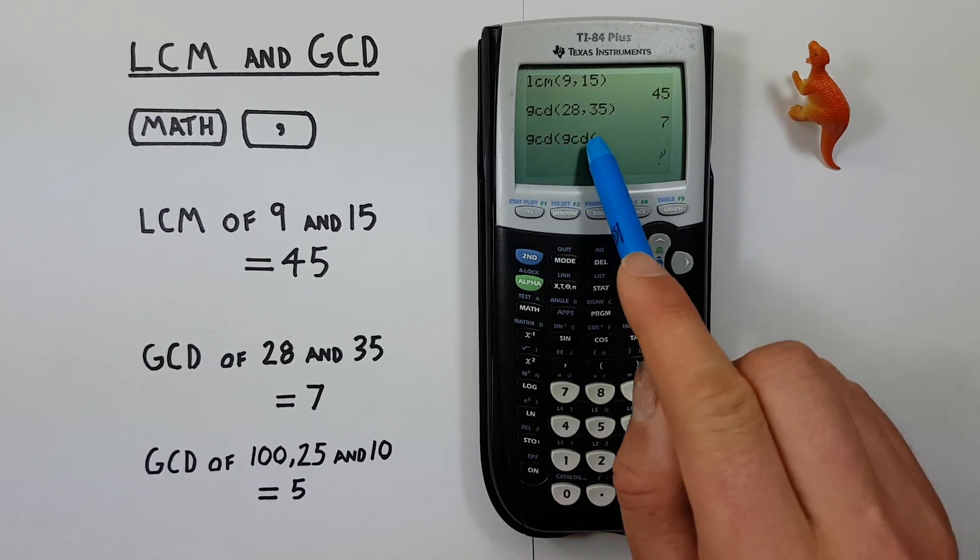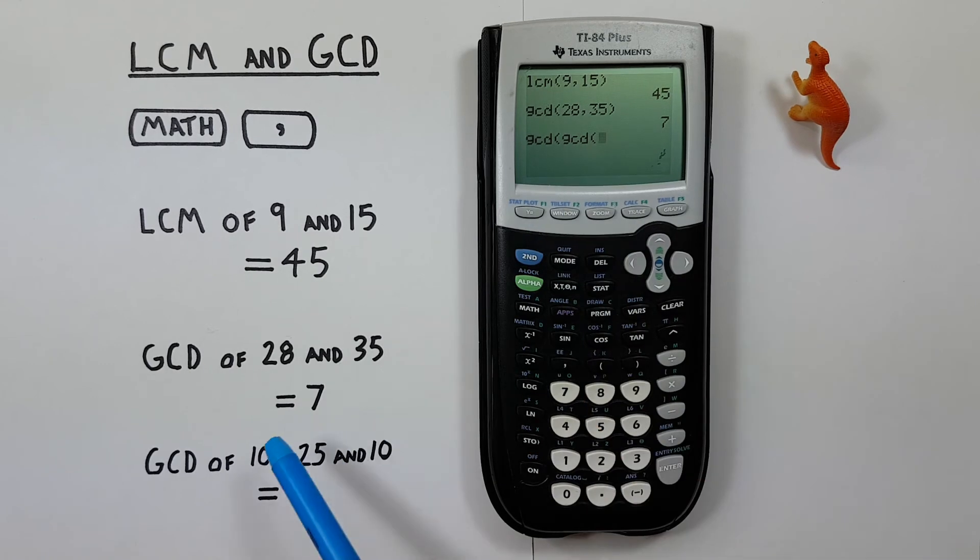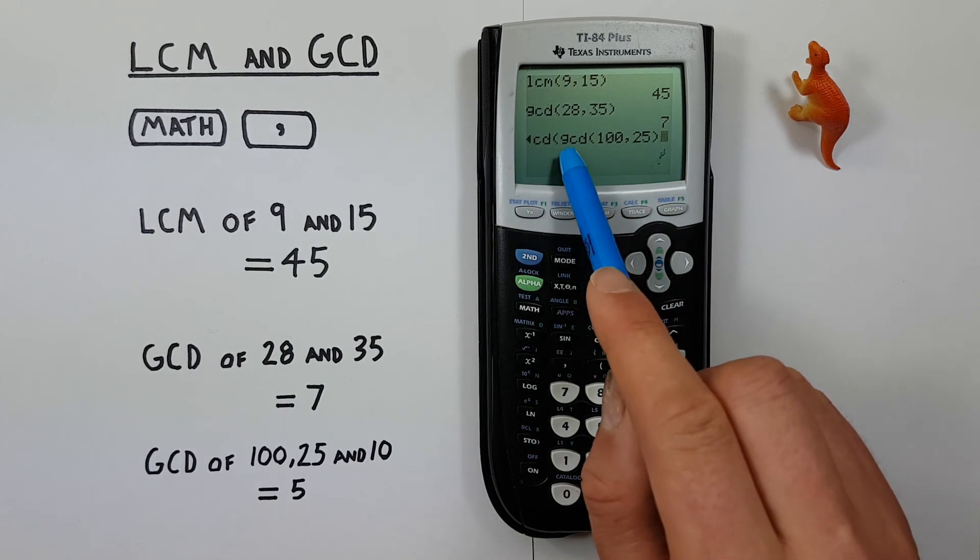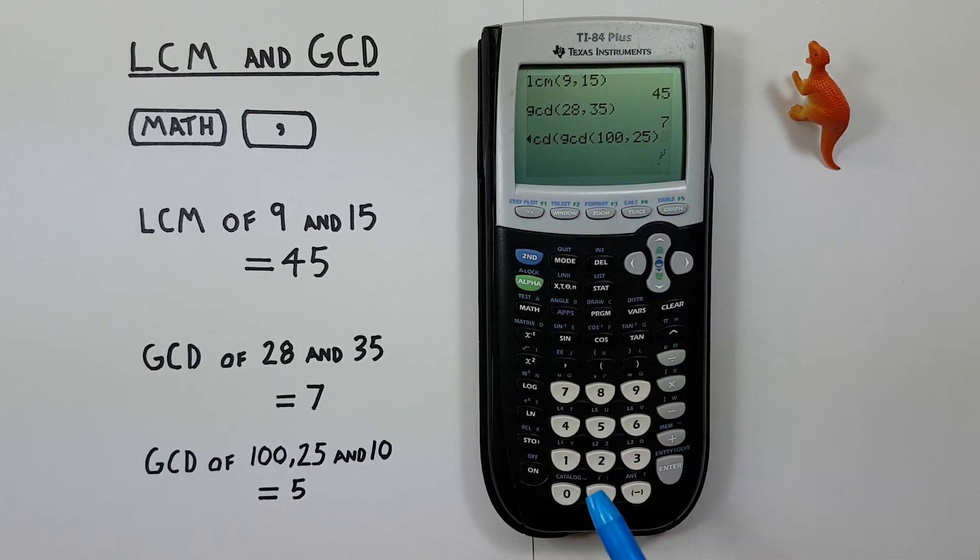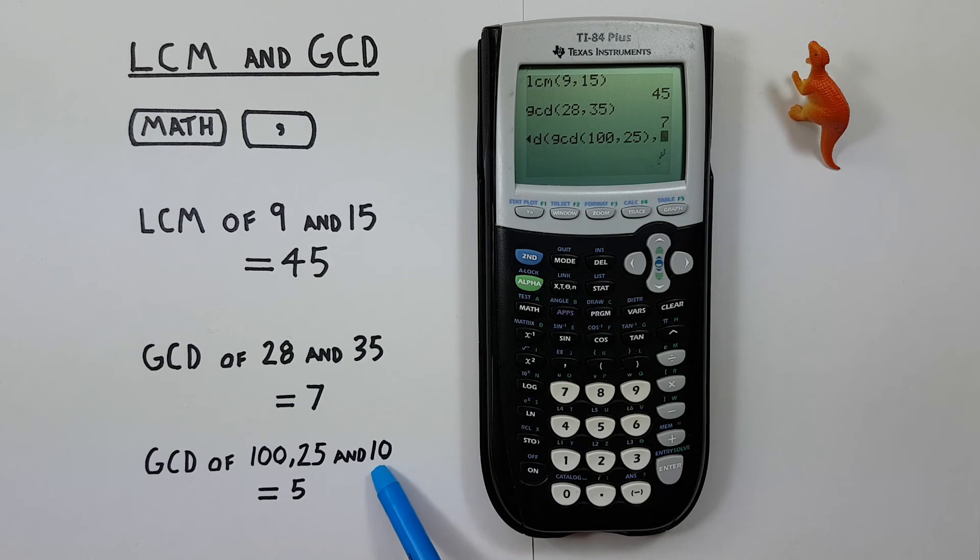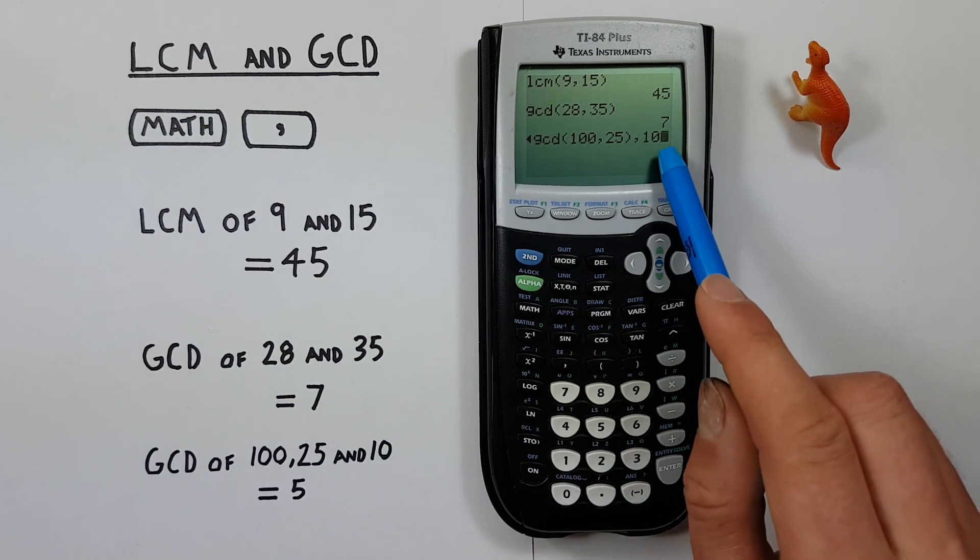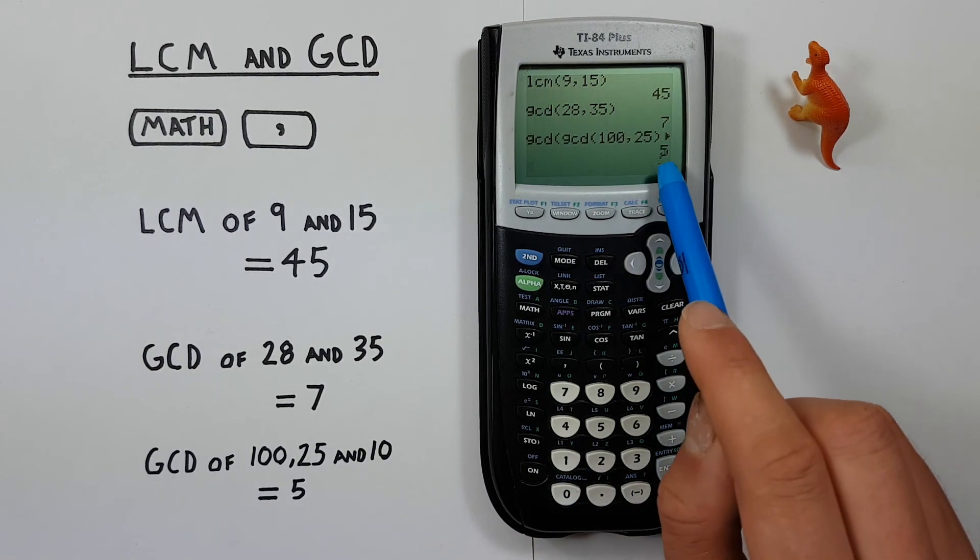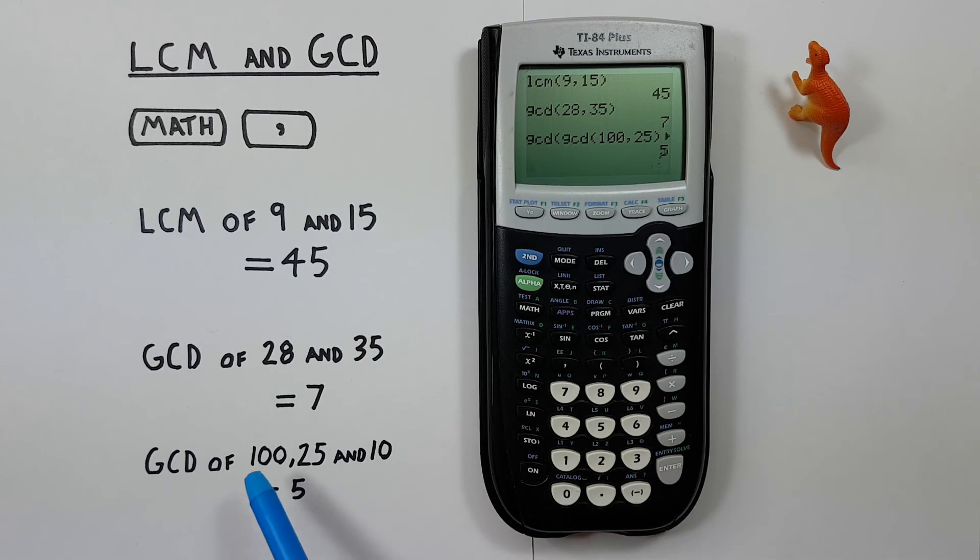We now have one GCD inside of another. So we'll first enter our first two numbers, which are 100, comma, 25, and then close these brackets. So this is a complete function in here, and then a comma, and our third number, which was 10, and then close these brackets as well, and press enter. And we get a result of 5, which is the GCD of all three of these numbers.